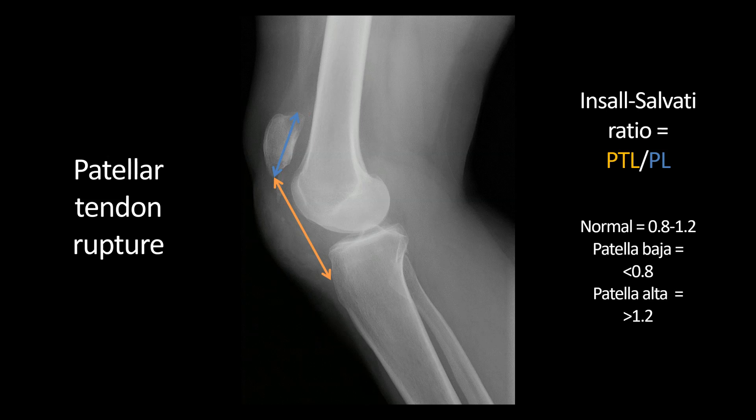When you divide that ratio, normal is 0.8 to 1.2. Patella baja — an abnormally low patella, which you would see with quadriceps tendon rupture — would be less than 0.8. Greater than 1.2, as in this case, would be patella alta. Keep in mind these numbers are specific for plain film; if you're reading MRI, the numbers will be a bit higher.